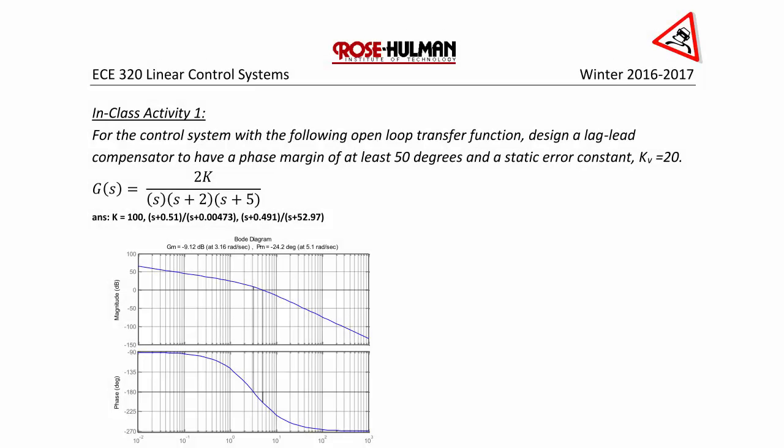Okay, let's try an example. In class activity one, for the control system with the following open loop transfer function, design a lag lead compensator to have a phase margin of at least 50 degrees and a static error constant kv equal 20.